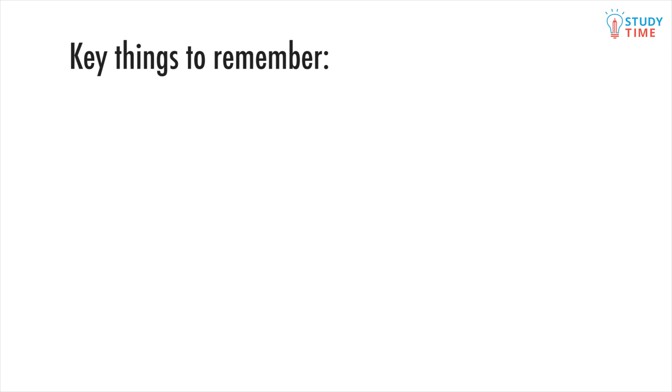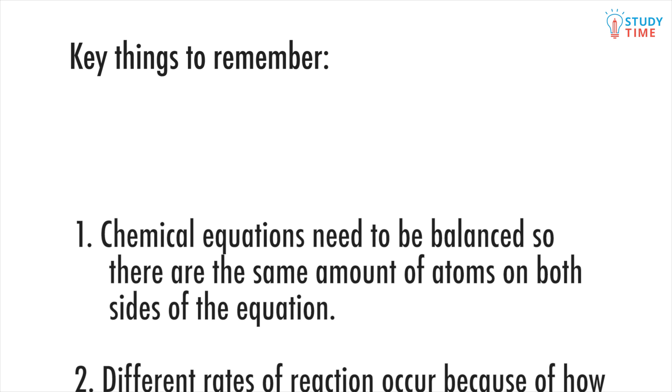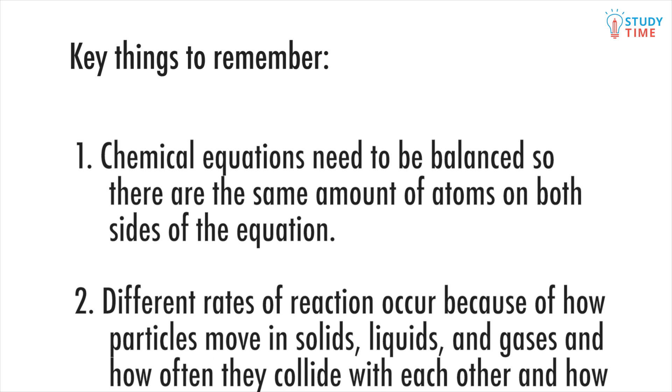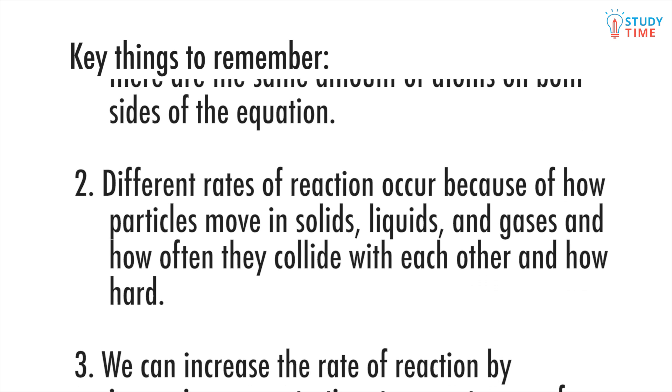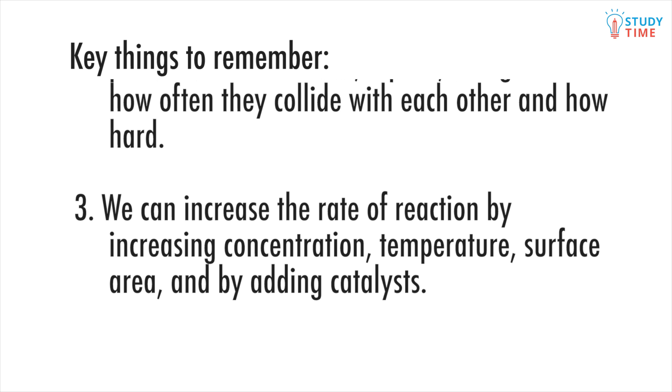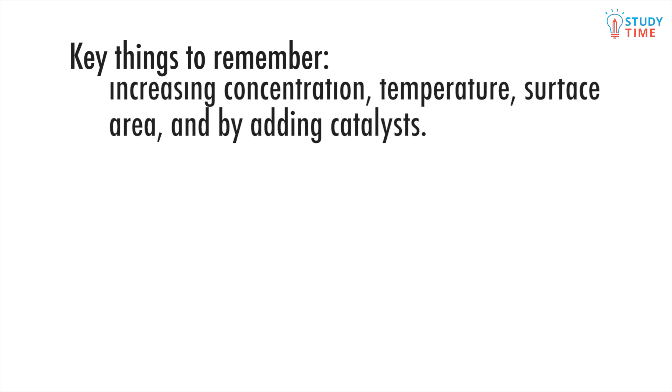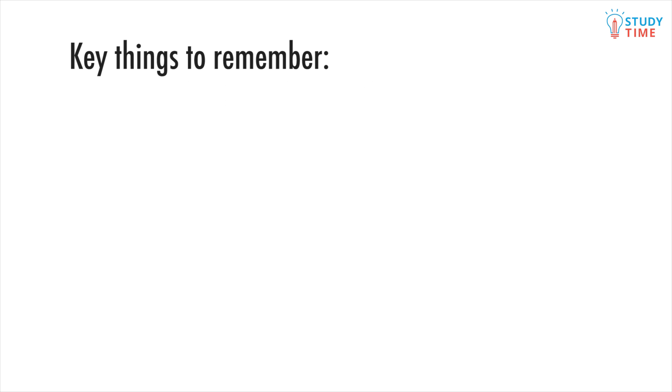There are some key things to remember. Chemical equations need to be balanced so there are the same amount of atoms on both sides of the equation. Different rates of reaction occur because of how particles move in solids, liquids and gases, and how often they collide with each other and how hard. We can increase the rate of reaction by increasing concentration, temperature, surface area, and by adding catalysts.